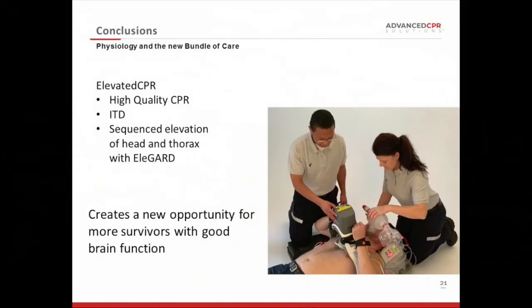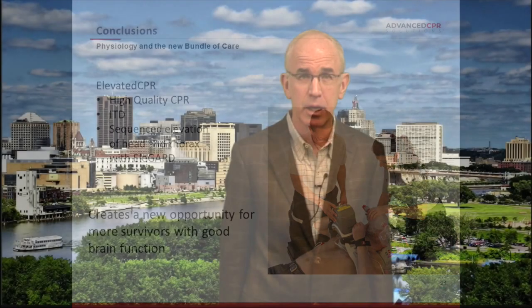In conclusion, elevated CPR offers several advantages, but you have to do it correctly — which means high-quality CPR, use of the impedance threshold device to enhance circulation since you're pumping blood uphill to the head, and sequenced elevation of the thorax and head with the Eligard to optimize results. In this manner, we create a new opportunity for more survivors with good brain function. After all, that's our goal. Thank you for your attention.